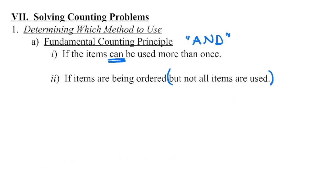Problems like the buffet, choosing menu items, building an outfit, combination locks, and social insurance numbers — all of those where we're figuring out how many possibilities exist at each stage — that's when we use the fundamental counting principle. If you have something being ordered but aren't using all items, you can also apply the fundamental counting principle, with this many choices in each position.